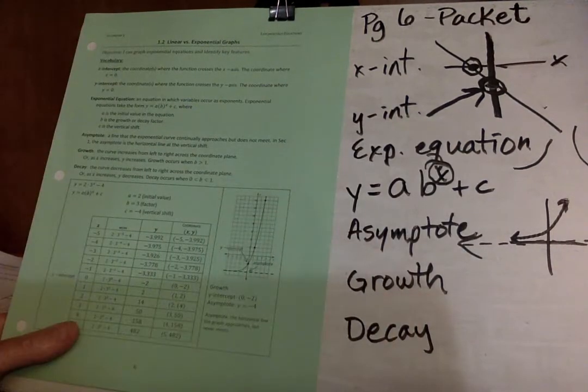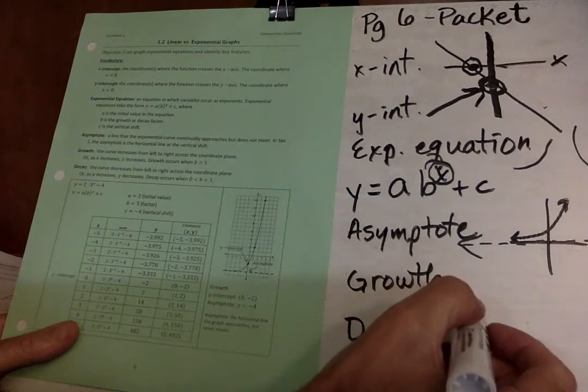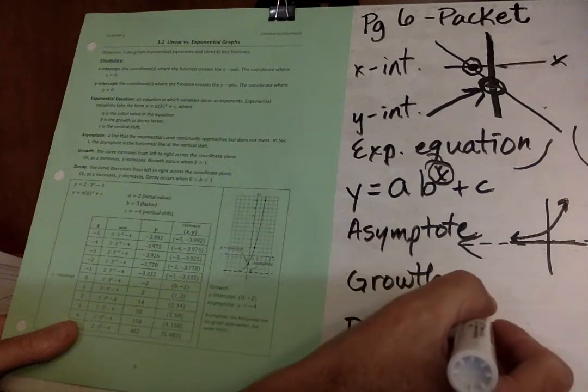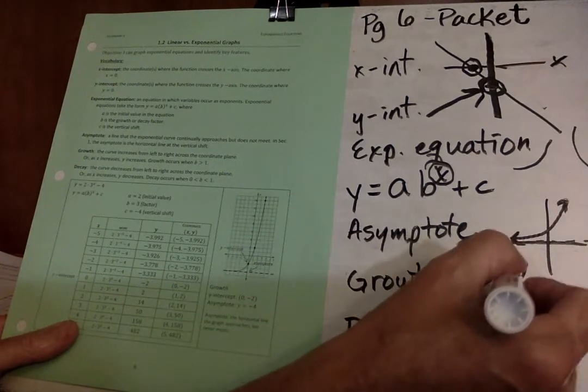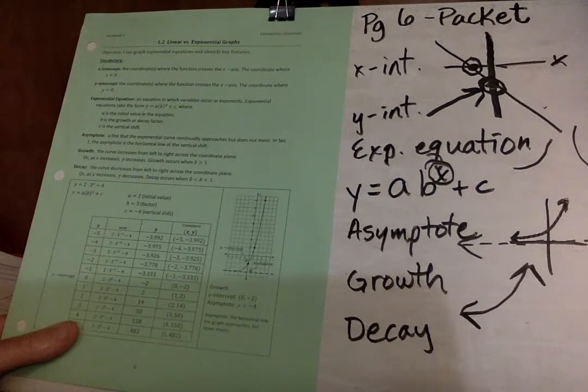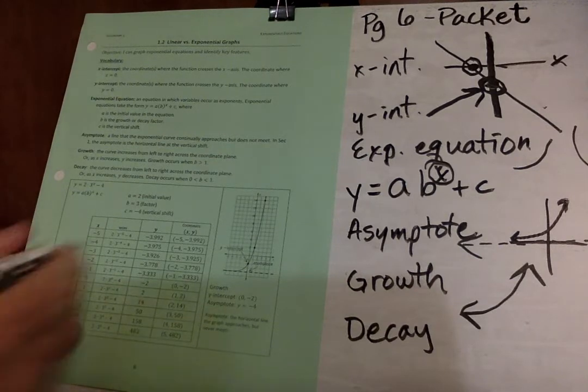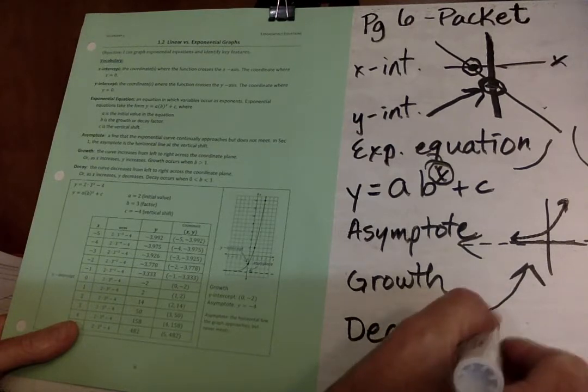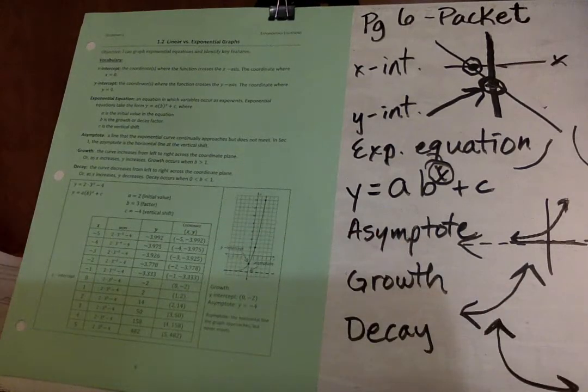Next, we will talk about growth. Growth is generally referred to exponential functions that go up and to the right. That's exponential growth. Decay is when the curve goes down and to the right. And there is all of our vocabulary.